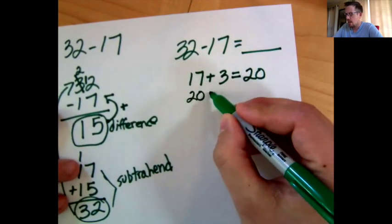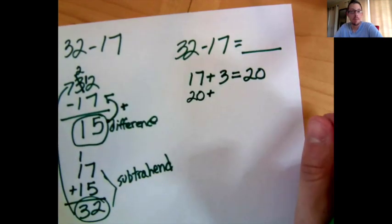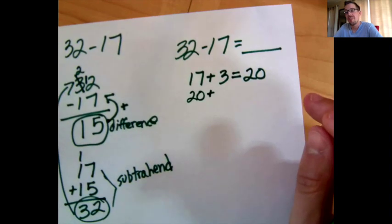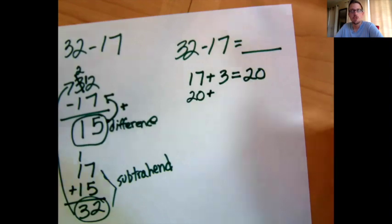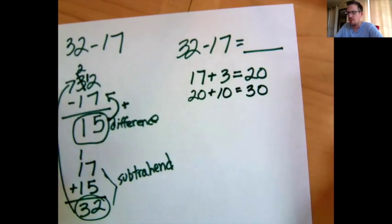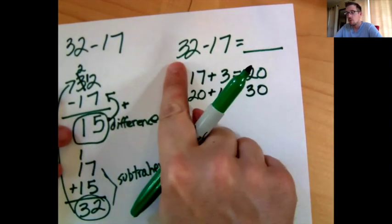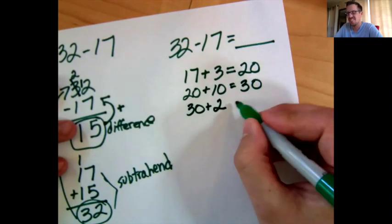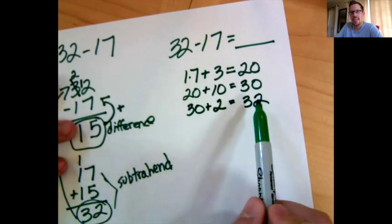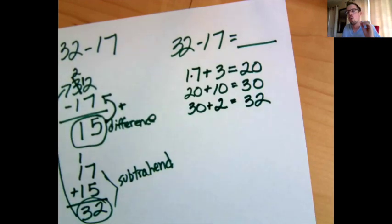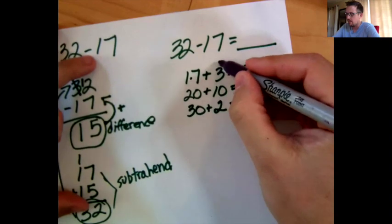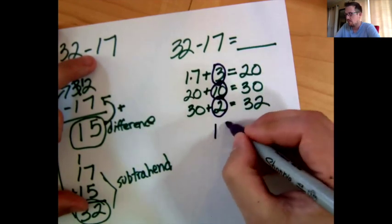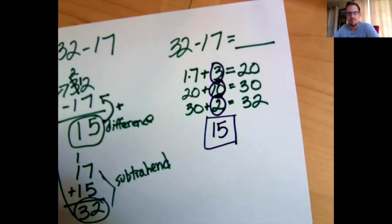From 20, we want to add something to get to 32. Adding 10 is so easy — you just raise the tens column by one — so 20 plus 10 is 30. We're still not at 32, but very close. Now it's obvious: 30 plus 2 is 32. So we took 17 and ended up at 32. What did we add? We added 3, then 10, then 2. So 3 plus 10 plus 2 is a total of 15 — which is our answer.